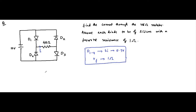The general convention is that in a diode, when the P end is connected to positive and the N end is connected to negative, it is forward biased — that is on.